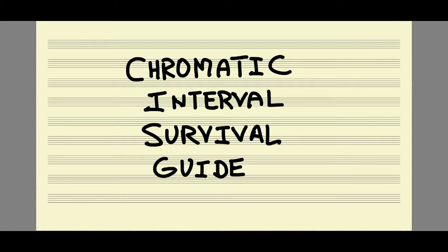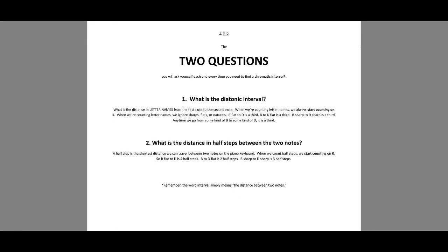The first page I'm going to show you is page 4.6.2. This is just a reminder of the two questions we ask ourselves every time we have to figure out a chromatic interval. Question number one: what is the diatonic interval? Or, how many letter names do we move through? Question number two: what is the distance in half steps between the two notes? That answer will help us determine the quality — whether it's major, minor, perfect, augmented, or diminished.